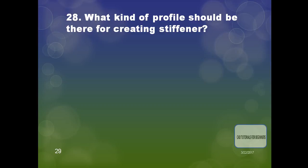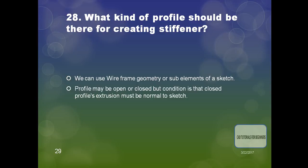The next question is: what kind of profile should be used for creating a stiffener? A stiffener is similar to a rib, used to increase stiffness. We can use wireframe geometry or sub-elements of a sketch. The profile may be open or closed, but if closed, its extrusion must be normal to the sketch. The profile can also be intersecting.